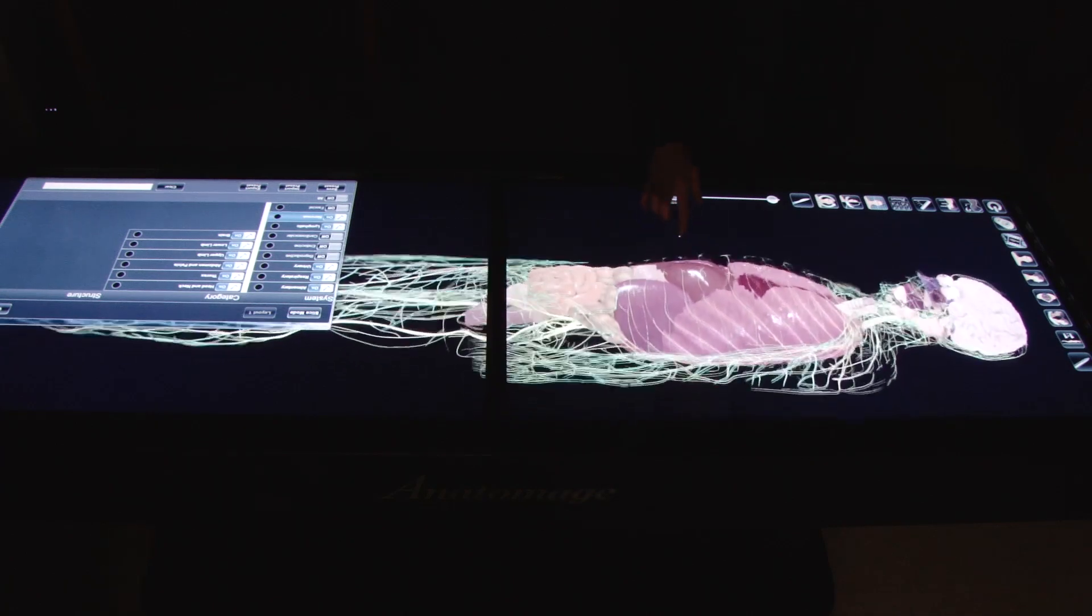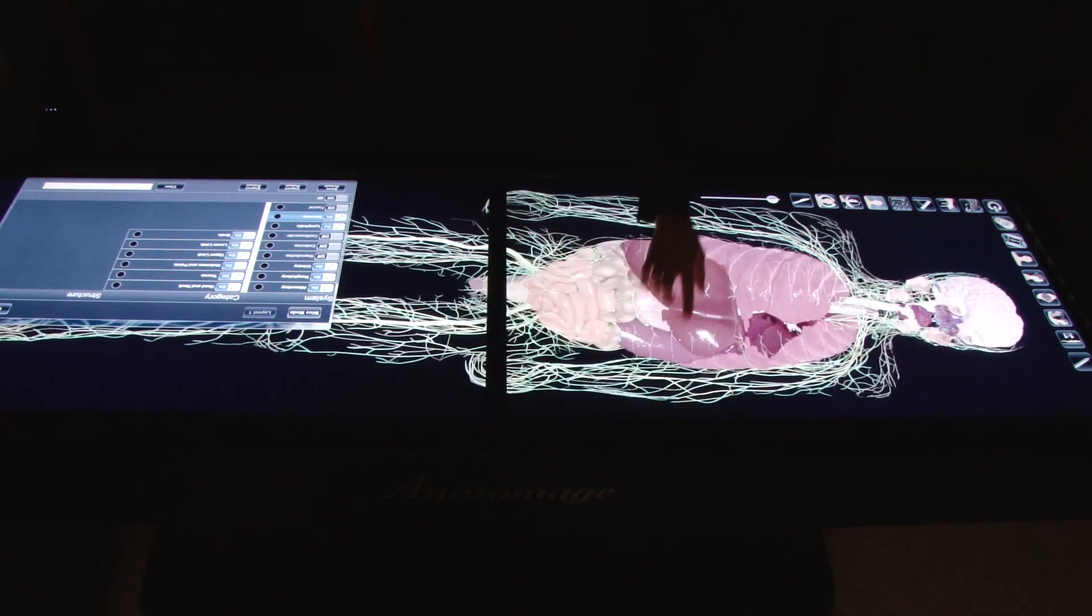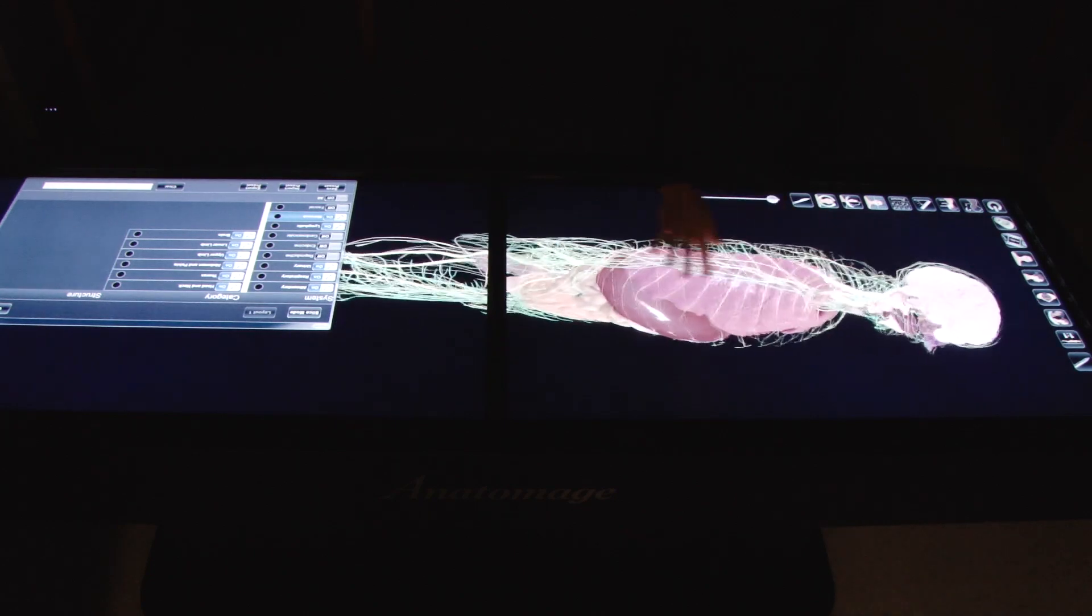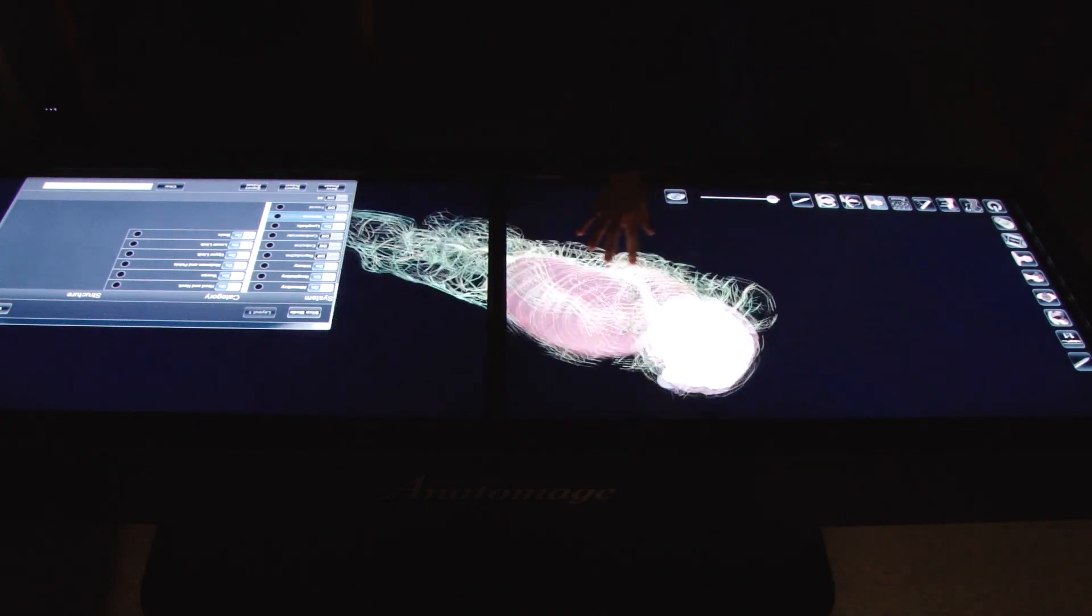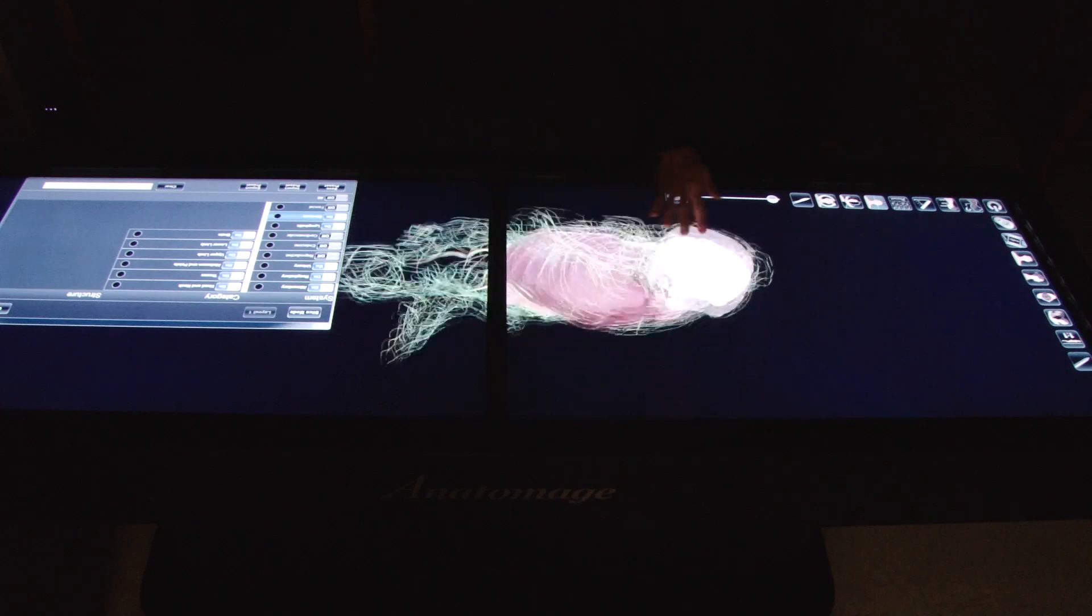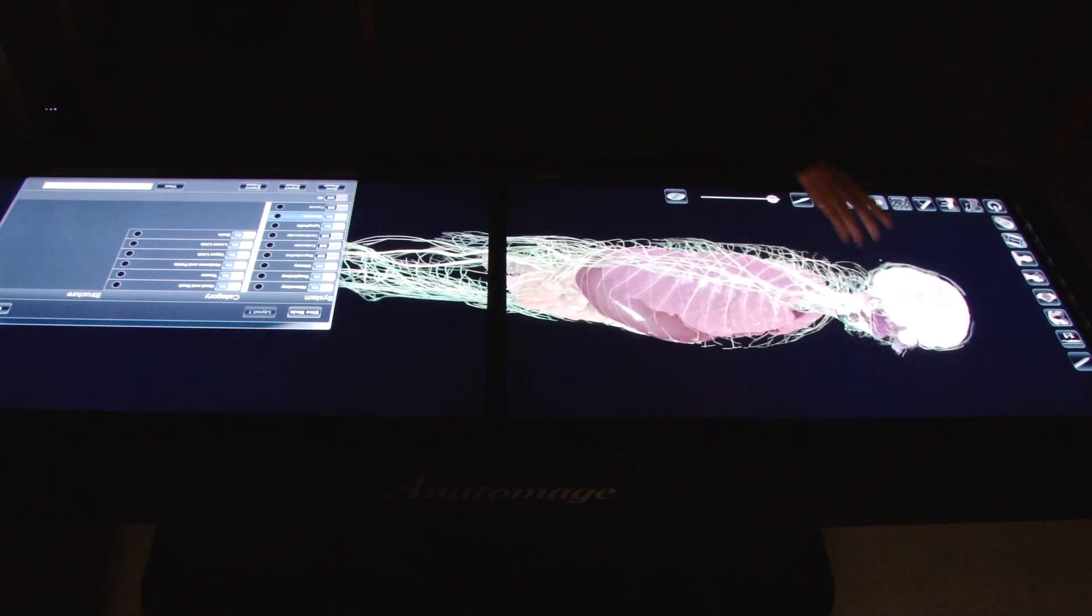In fact, this table allows students to isolate body systems such as the nervous system or the cardiovascular system or the skeletal system or muscular system, respiratory system, etc.